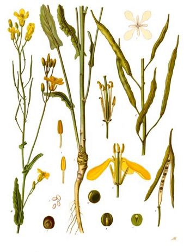Rapeseed, Brassica napus subsp. napus, also known as rape, oilseed rape, and in the case of one particular group of cultivars, canola, is a bright yellow flowering member of the family Brassicaceae (mustard or cabbage family), cultivated mainly for its oil-rich seed. It is the third-largest source of vegetable oil and second-largest source of protein meal in the world.